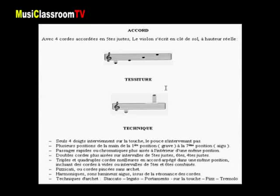La tessiture, c'est-à-dire l'étendue du violon, est assez grande à l'aigu puisqu'elle va du sol première corde au do extrême aigu.